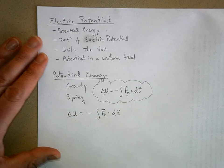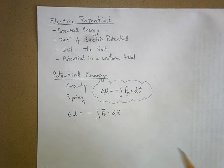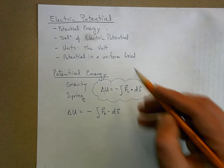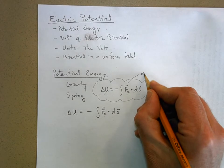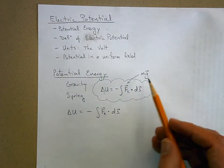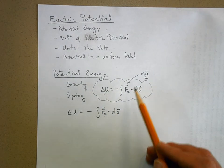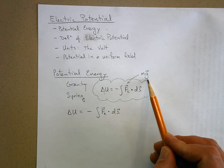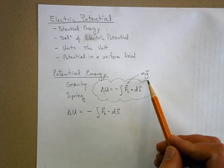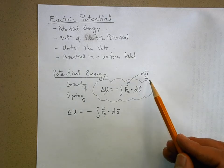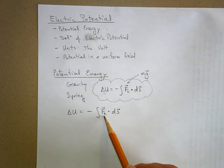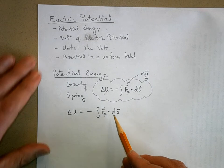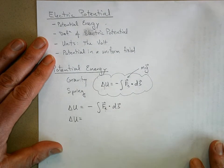Just like with gravity — where the force was mg, the mass times the gravitational field, which could be GMm/r² or just 9.8 m/s² near Earth's surface — we're going to express the electric force in terms of the electric field. So delta U equals negative [electric force] dot ds.